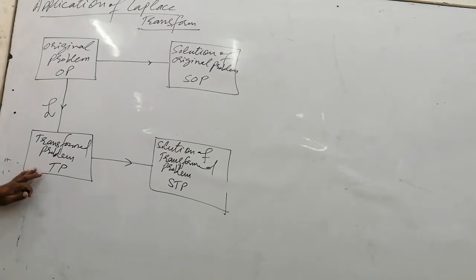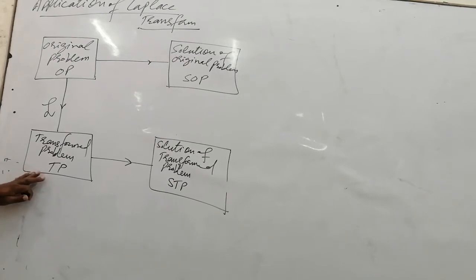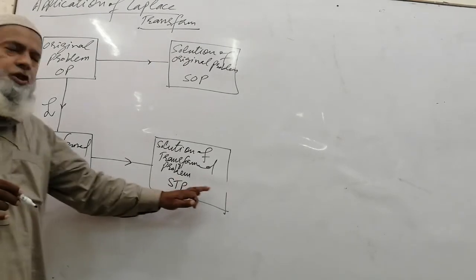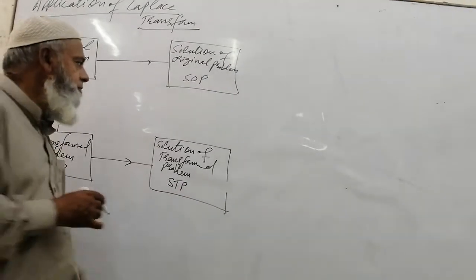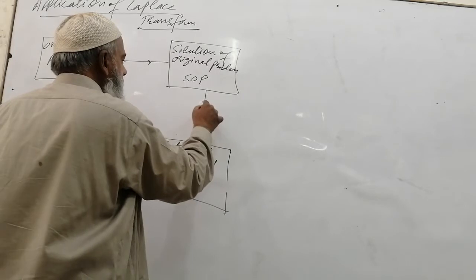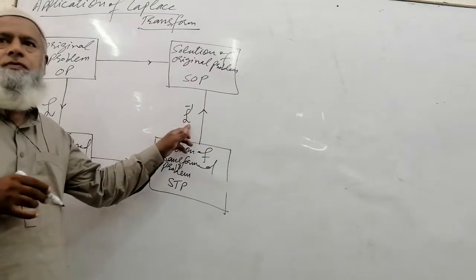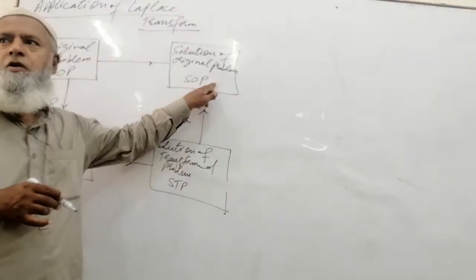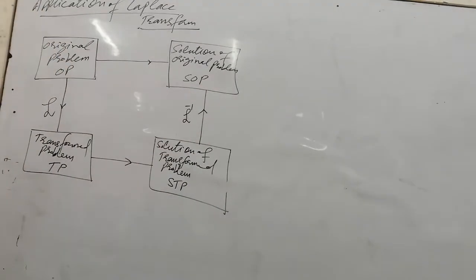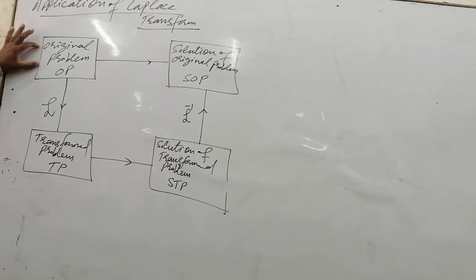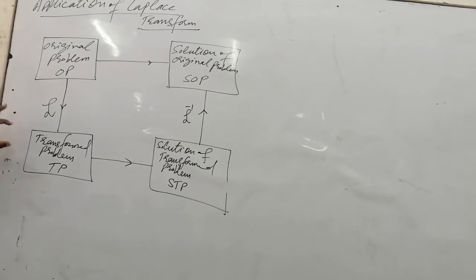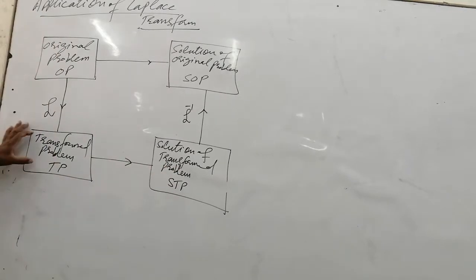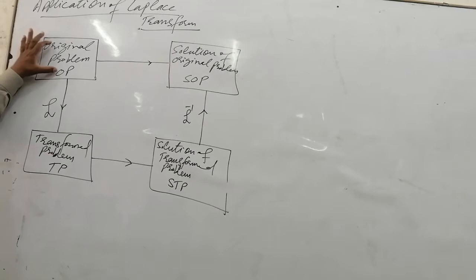After taking the Laplace transformation and then solving the transform problem, we get the solution of the transform problem. Then finally we take its Laplace inverse transform. By taking its Laplace inverse transform we get the solution of the original problem. Basically, the steps are: take the Laplace transformation of the original problem, convert it into the Laplace transform problem, and then solve this problem. Obviously, solving this problem will be easier compared to solving the original problem.